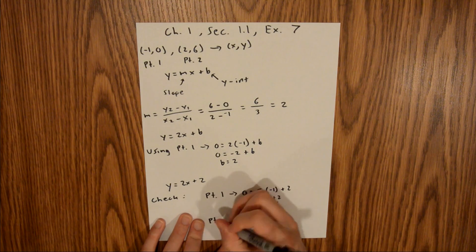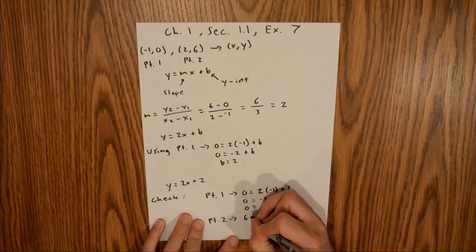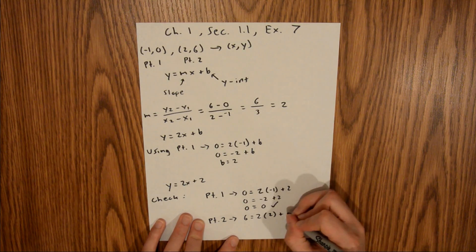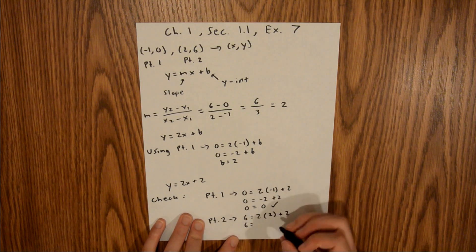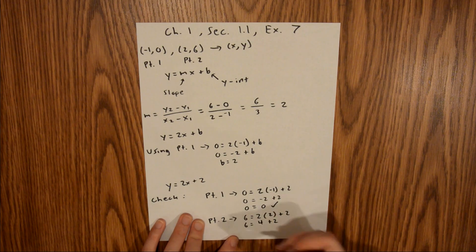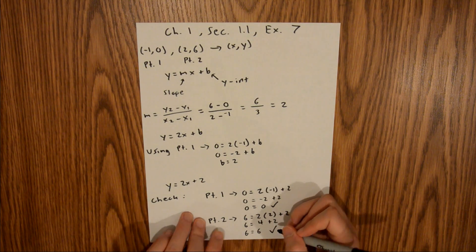We'll do the same thing for point 2. Your y-coordinate is 6. That's equal to 2 times your x-coordinate, which is 2, plus 2. Six equals 2 times 2, which is 4, plus 2. Four plus 2 is 6. So 6 equals 6. Both of our points check out.